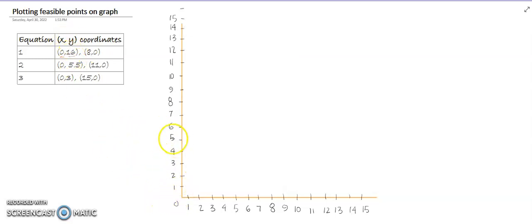This simply means that x1 is 0. But x2 for equation number 1 is 16, so we have to mark 16 here. x1 is representing horizontal and x2 is representing vertical, so 16 we have to mark here.